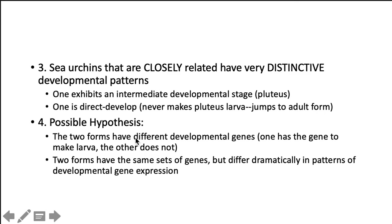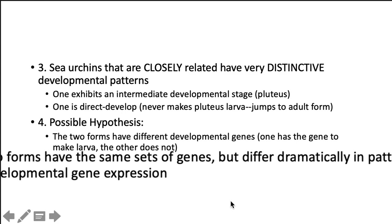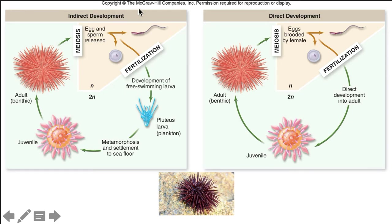Scientists looked at closely related sea urchins with very distinctive developmental patterns. One species has an intermediate larval stage called the pluteus; the other undergoes direct development, jumping straight to the adult form. Two hypotheses: the two forms have different developmental genes, or they have the same genes but differ in gene expression patterns. The evidence supports the second hypothesis — both have the same gene sets but undergo different gene expressions. A diagram shows the indirect development pathway through the larval stage and metamorphosis versus direct development straight to a juvenile adult form.